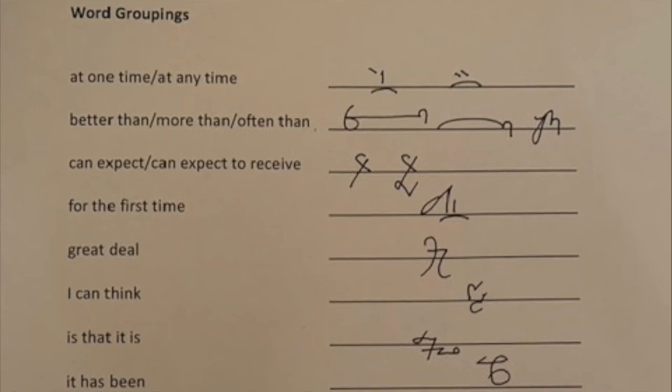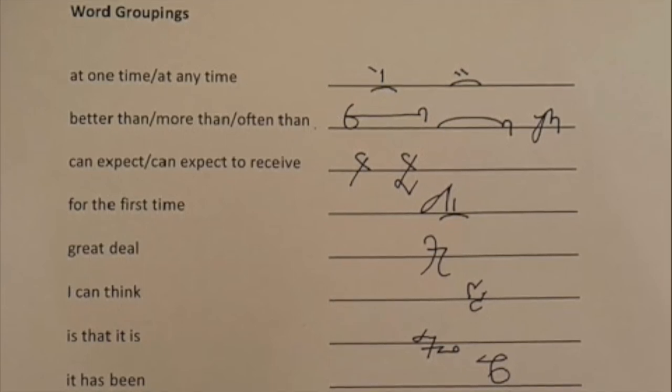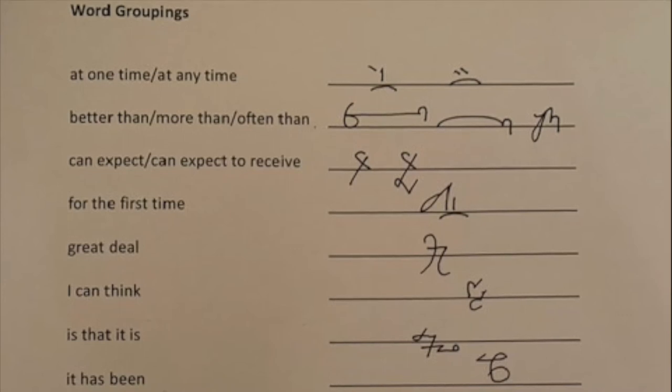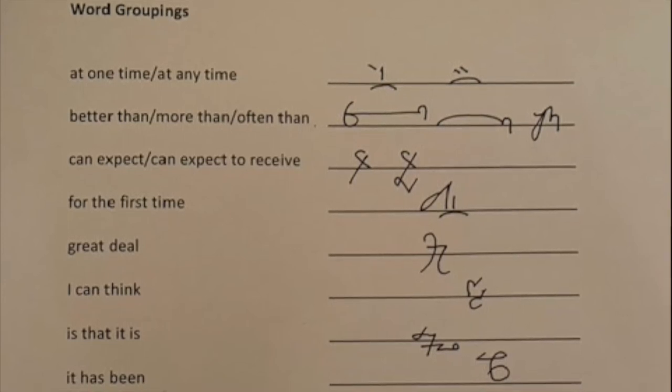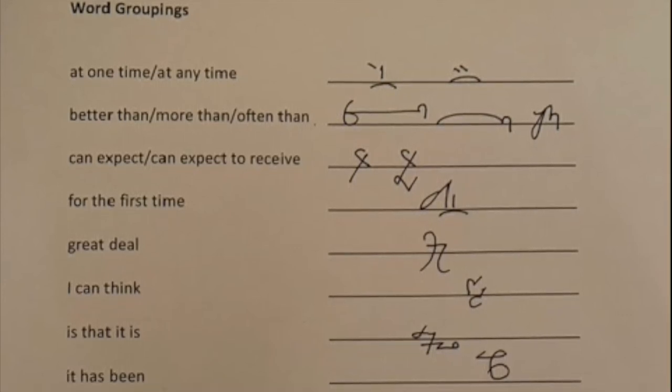Let's start with AT ONE TIME. We're using the figure one there, and in this case it's not necessary to circle the one, because it's part of the grouping.